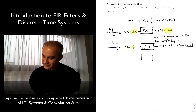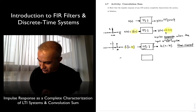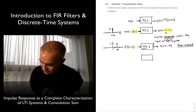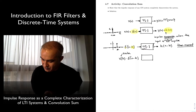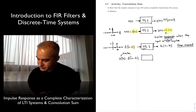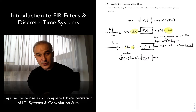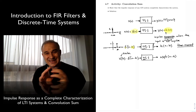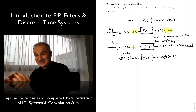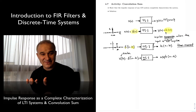Now, what happens if instead of putting a unit impulse, we put an impulse that is scaled by a particular scalar — I'm going to call that x of k times delta of n minus k? If the system is LTI, the output is just going to be h of n minus k times that scaling factor x of k. You multiply by a scaling factor at the input, and you get the same impulse response multiplied by that scaling factor.